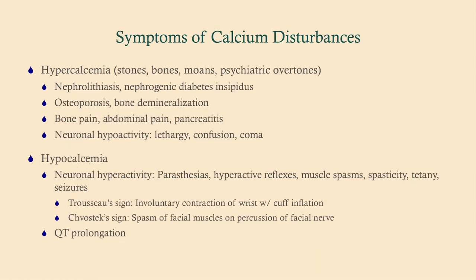For symptoms: hypercalcemia — remember the mnemonic 'stones, bones, moans, and psychiatric overtones.' This includes kidney stones, nephrogenic diabetes insipidus (high calcium blocks ADH effect), osteoporosis and bone pain, abdominal pain and pancreatitis, and neuronal hypoactivity causing lethargy, confusion, and coma. Hypocalcemia causes neuronal hyperactivity: paresthesias, increased deep tendon reflexes, muscle spasms, tetany, and seizures.